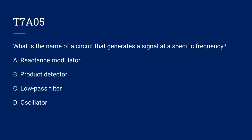T7A05. What is the name of a circuit that generates a signal at a specific frequency? A. Reactance Modulator. B. Product Detector. C. Low Pass Filter. Or D. Oscillator. The correct answer is D. Oscillator.